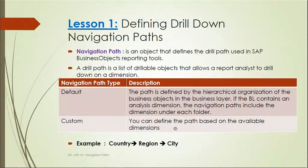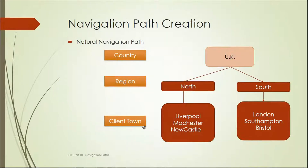For example, a default navigation might go from country, then to region, and from region to city. So a natural or default navigation would have Country like UK, then a region under it, then city or town under that. This is the default path going from country to region to town.